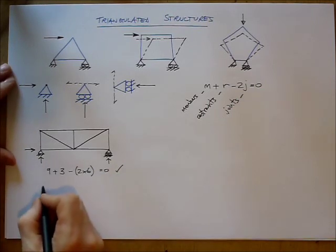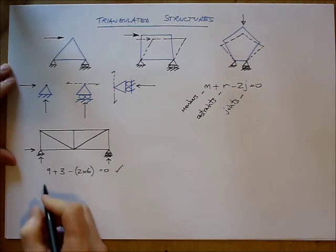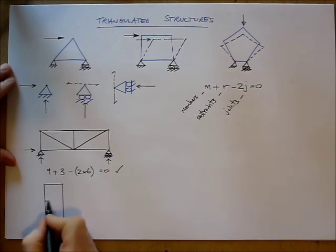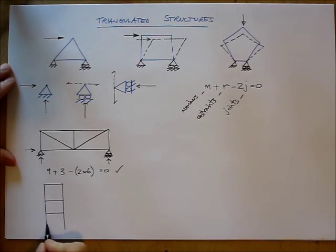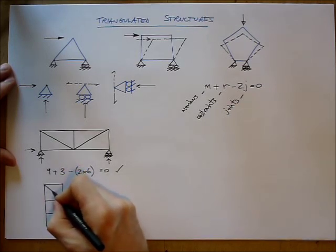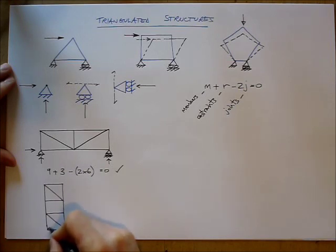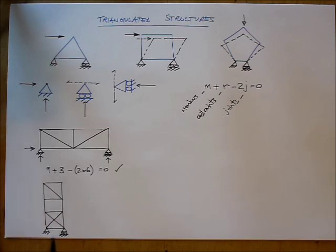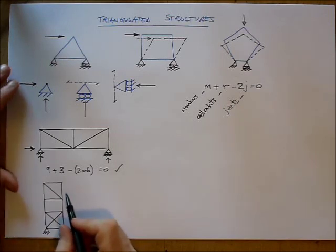Let's have another structure. Let's say that I had a tower structure. There it is. Give it some bracing. And give it similar supports. A pin and a roller. Horizontal roller. Now, let's check this one out.